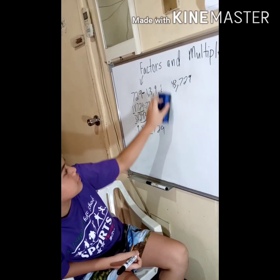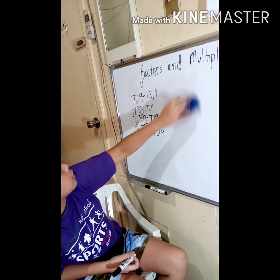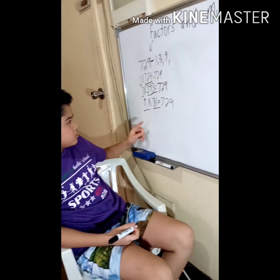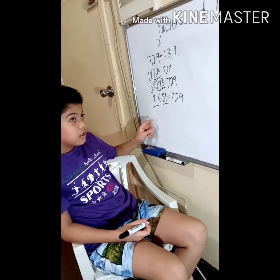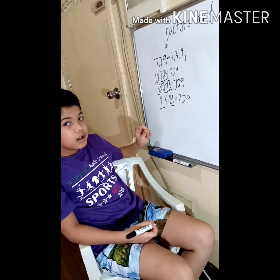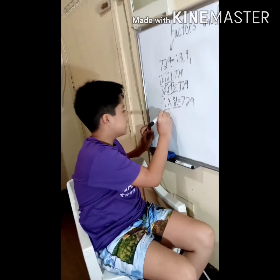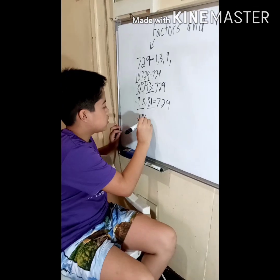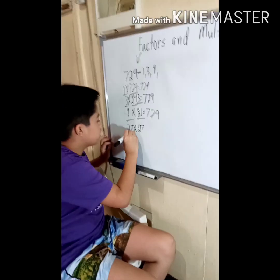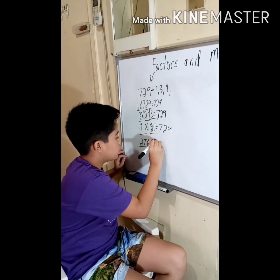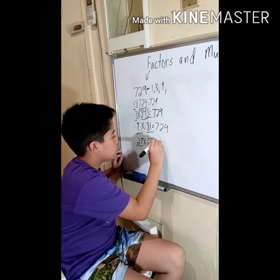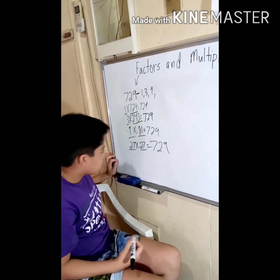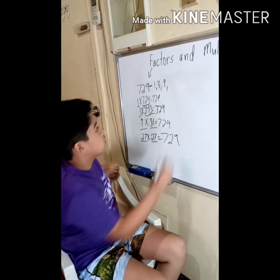And 27 is also a factor: 27 times 27 equals 729. So 27 is included in the factors of 729 as well.